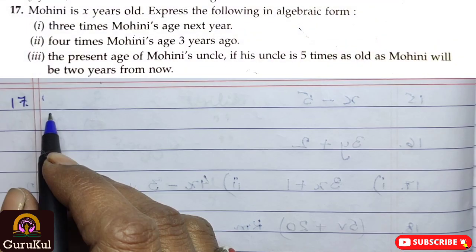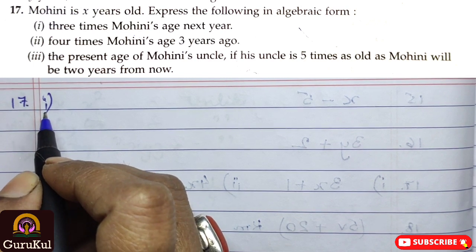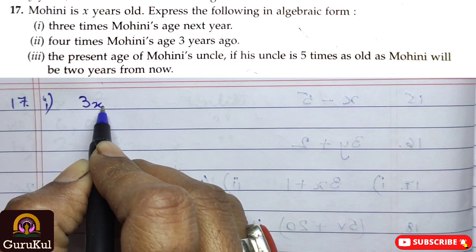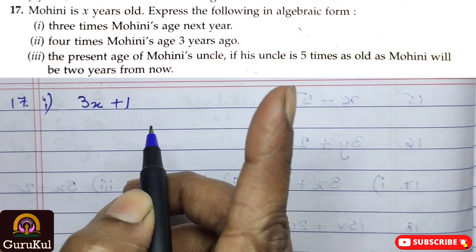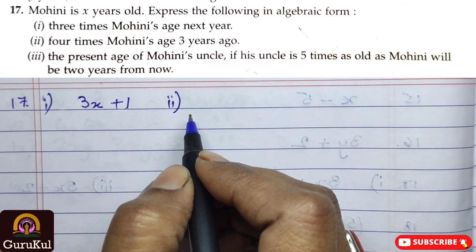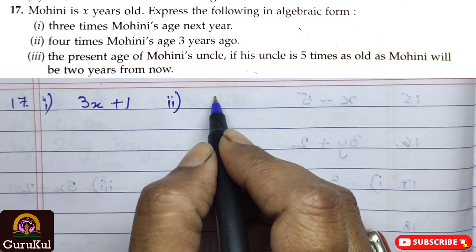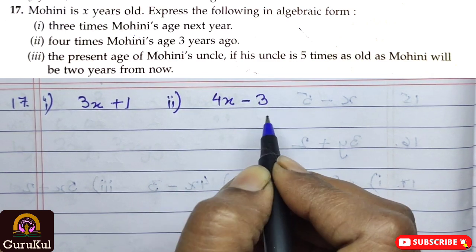Question number 17. He is x years old. Now, we have to express the following in algebraic form. The first part, it is 3 times Mohini's age next year. 3 times means 3x and next year means plus 1. So, this will be Mohini's age next year. Second part, it says 4 times Mohini's age 3 years ago. So, 4 times means 4x and 3 years ago means we are moving back. That means subtract 3.